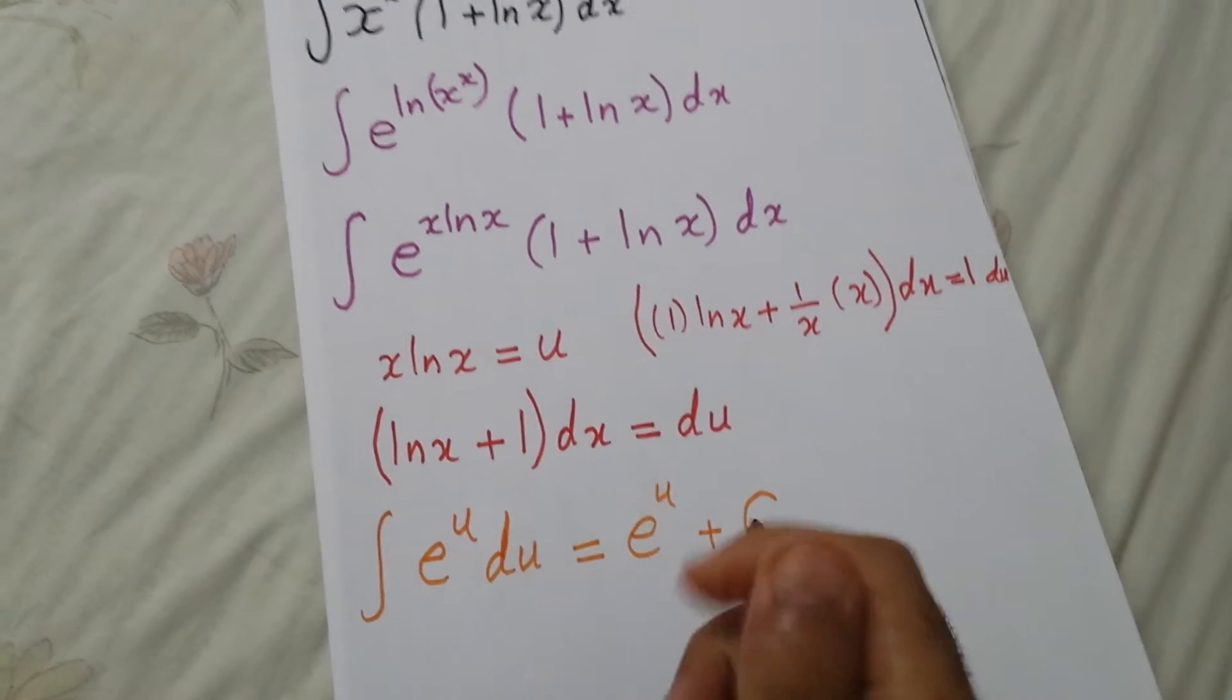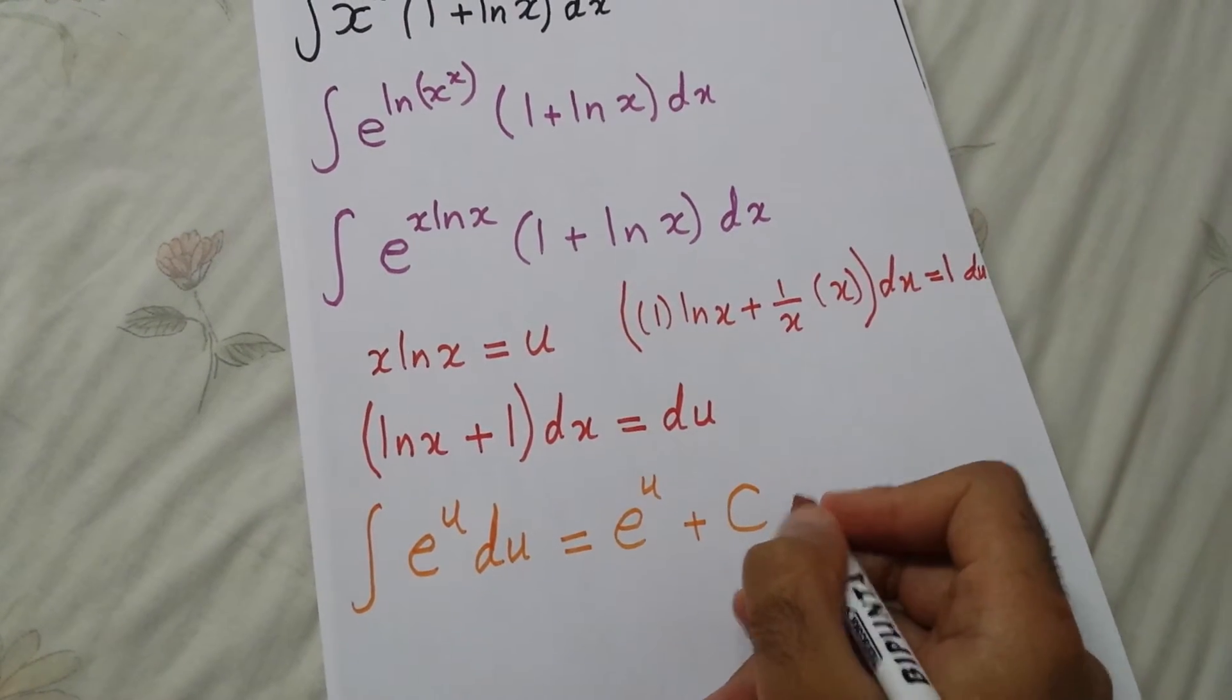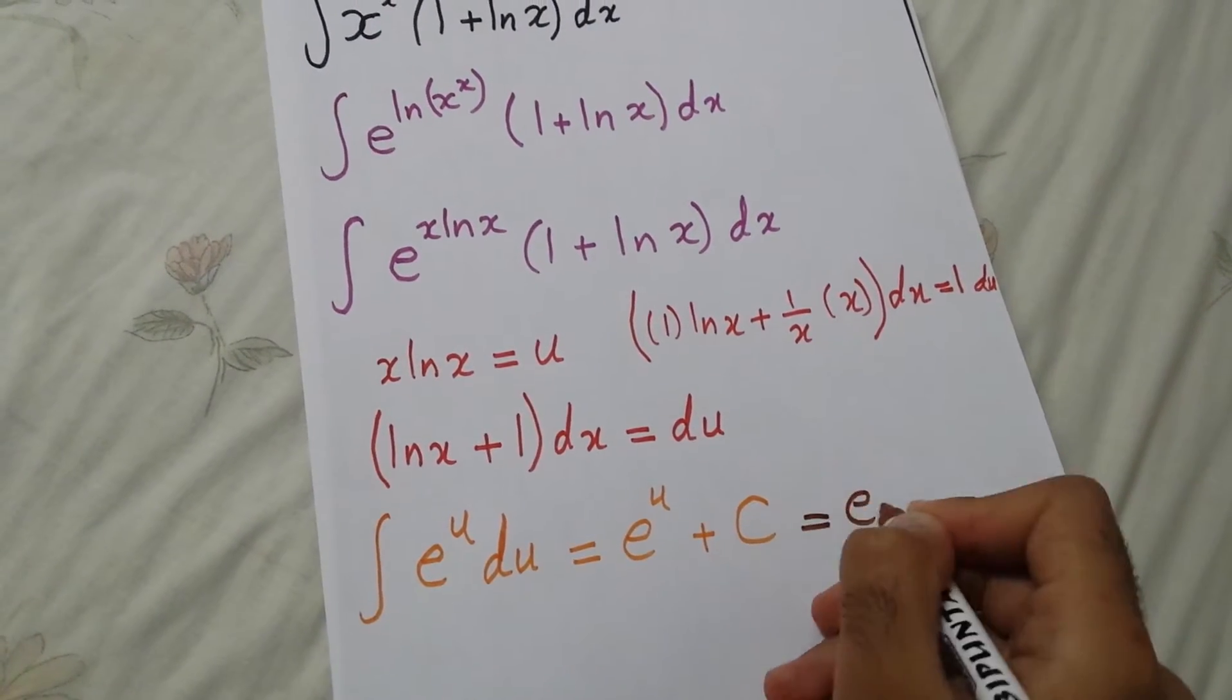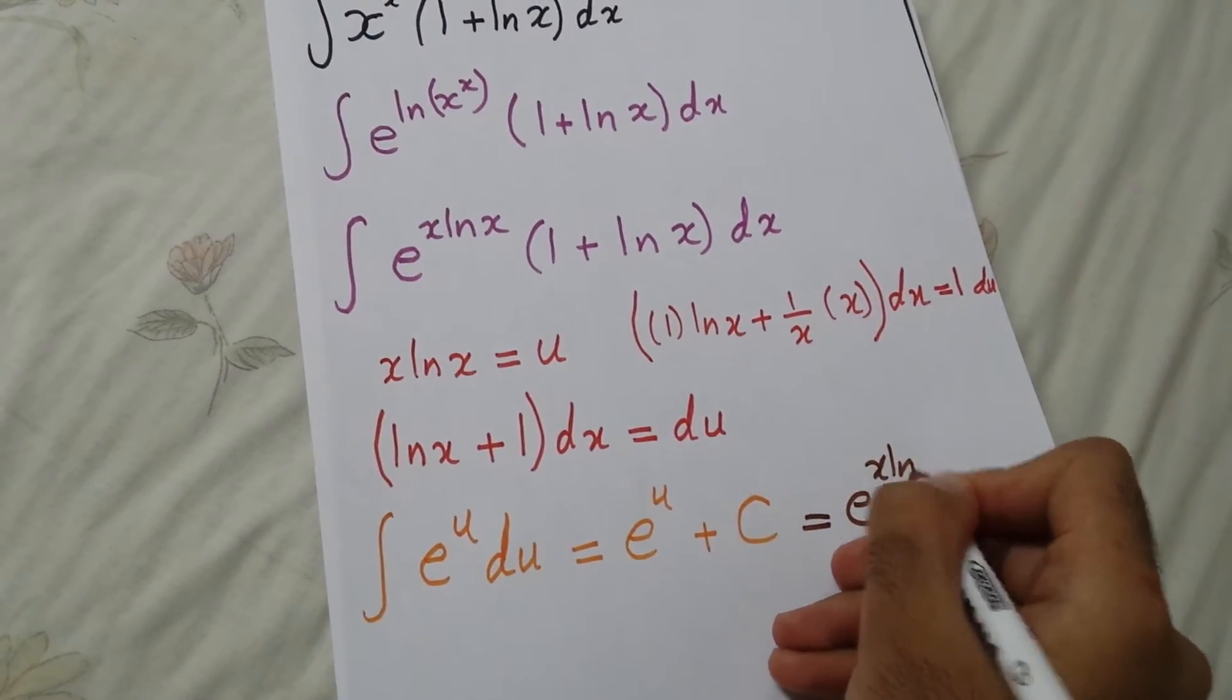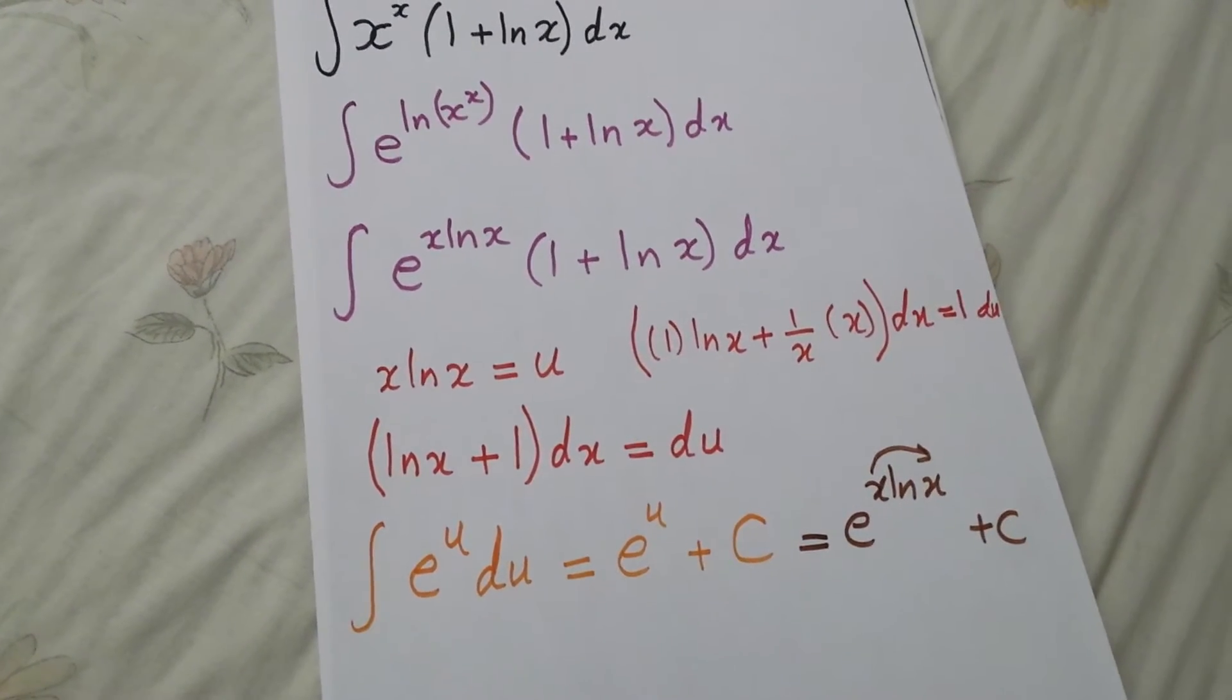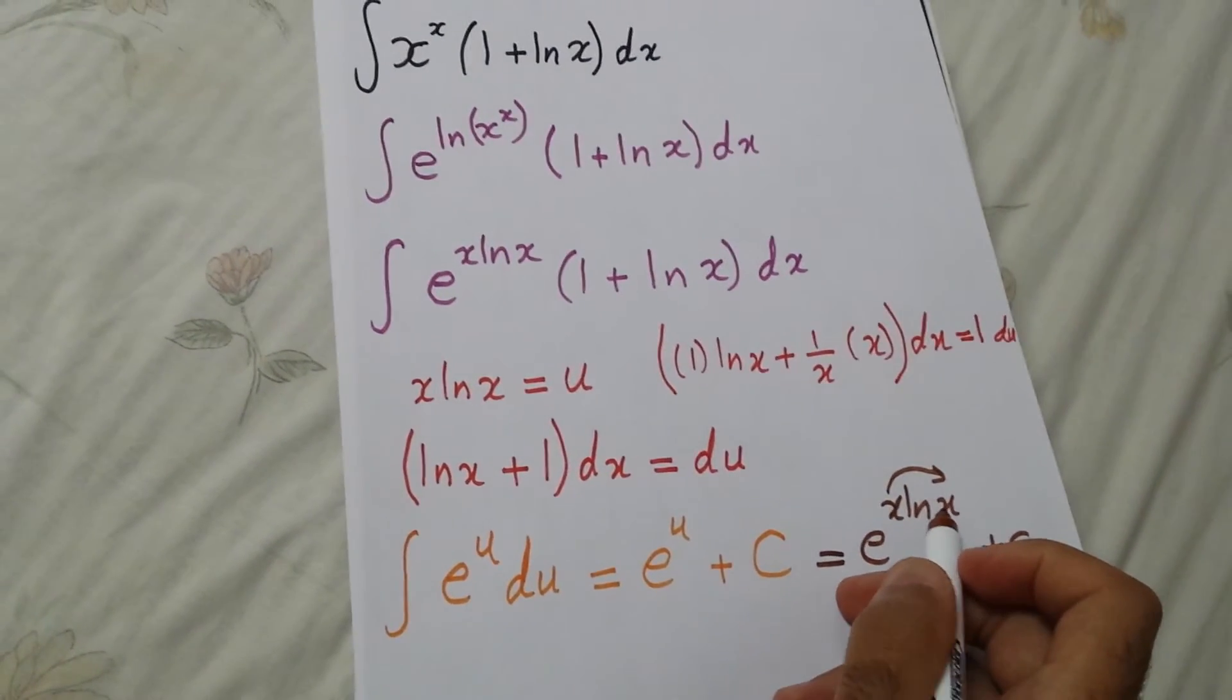We will write the answer in terms of x, so it will be e to the u, which is x ln x, plus constant. Now take this x to be power of the x and this x.